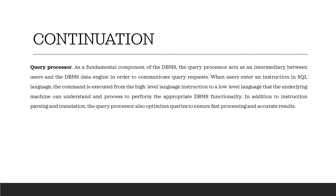Number five, query processor: as a fundamental component of DBMS, the query processor acts as an intermediary between users and the DBMS data engine in order to communicate query requests. When users enter an instruction in SQL language, the command is translated from high-level language instructions to a low-level language that the underlying machine can understand. The query processor also optimizes queries to ensure fast processing and accurate results.